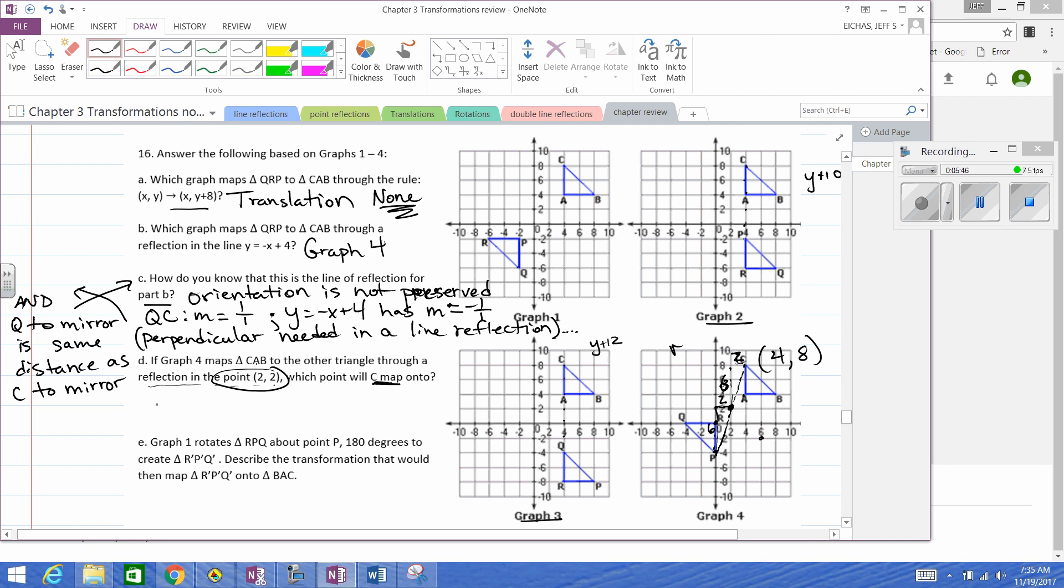Graph one rotates triangle RPQ about point P 180 degrees. Okay, I get it now. So here's point P. If we were to map this triangle 180 degrees around this point, Q would go up four spaces, so go another four, that's Q prime. R would have to move four in this direction, so this is where R prime would land. And P stays stationary because it's the center of rotation.